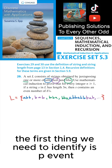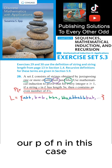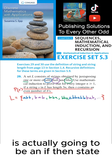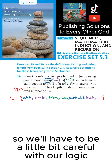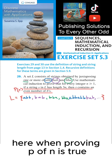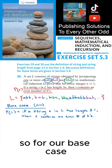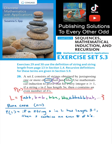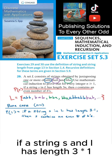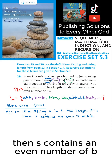The first thing we need to identify is P of N. Our P of N in this case is actually going to be an if-then statement, so we'll have to be a little bit careful with our logic here when proving P of N is true. For our base case, P of 1 is the statement: if a string S in L has length 3 times 1, then S contains an even number of Bs.